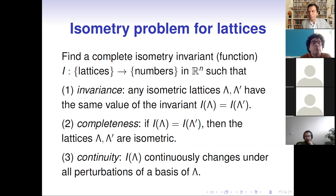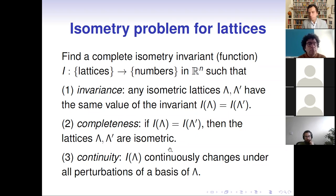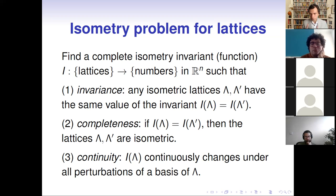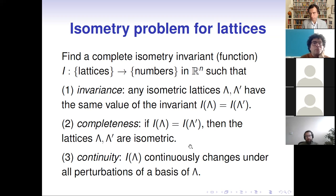Completeness means our invariant is so strong that it distinguishes all non-isometric lattices. There are infinitely many non-isometric lattices, so this is a really hard condition. Continuity means that if you perturb our lattice — and usually a lattice is given by a basis, so it's natural to measure perturbation in terms of basis vectors — our invariant should also change continuously with respect to a certain metric on the invariant space. Today we'll mainly focus on invariance and completeness, but I will also mention how we produce a continuous metric.